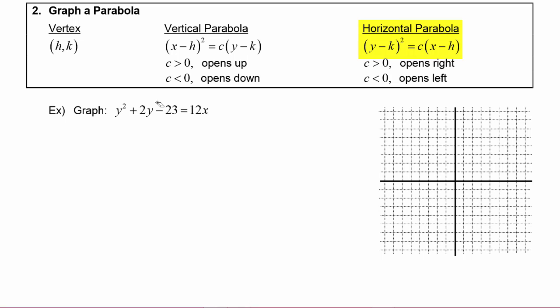In the case of a horizontal parabola, the y variable will be the one that's being squared and the x variable will be linear, and that is your signal that that is a horizontal parabola. This time if c is positive the parabola opens right and if c is negative the parabola opens left.